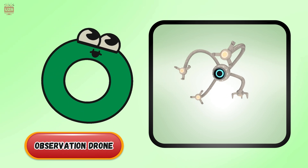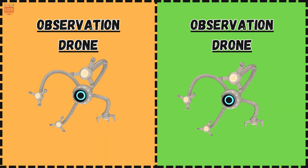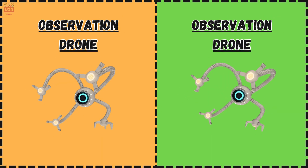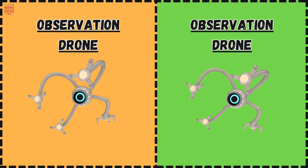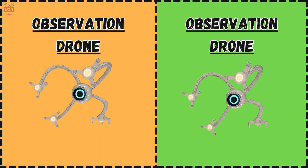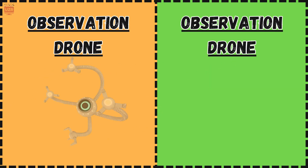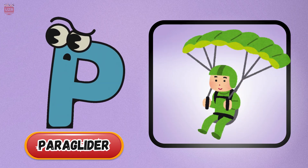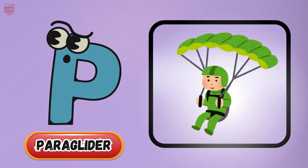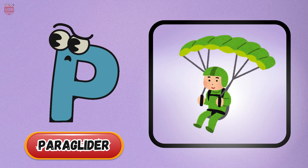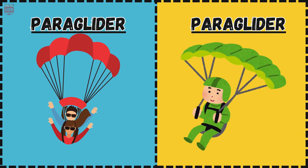O is for observation drone, watching closely from the blue. P is for paraglider, floating in the sky, so true.